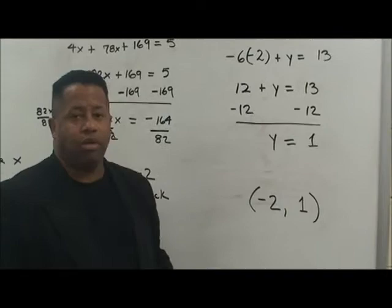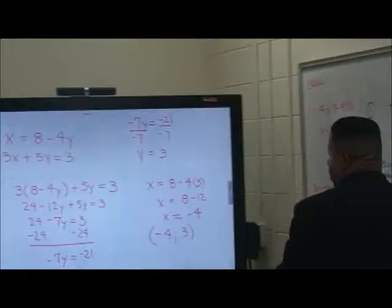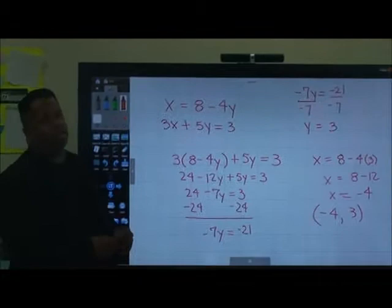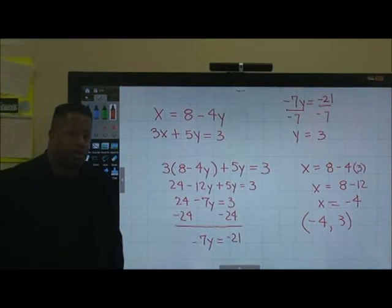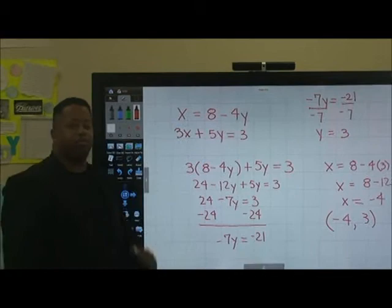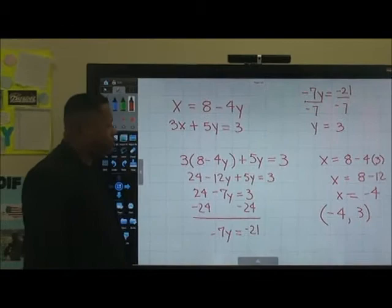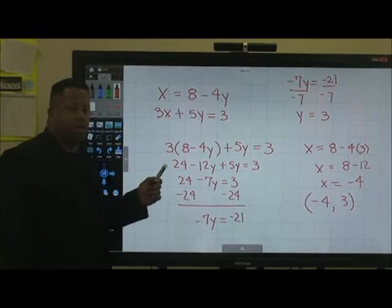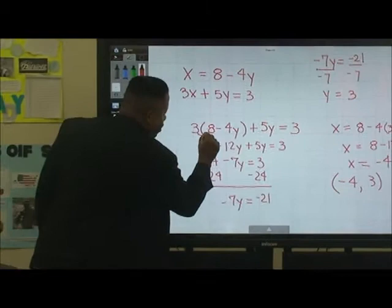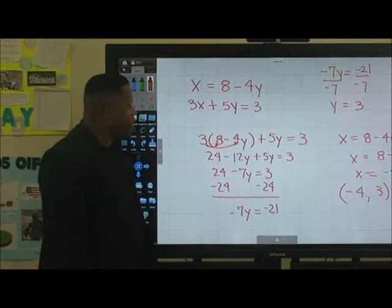Let's do another problem. We have x is equal to 8 minus 4y for the first equation, and 3x plus 5y equals 3 for the second equation. It's obvious that x is set alone, so we're going to use that expression and plug it in for x into the second equation. So 3 times (8 minus 4y) plus 5y is equal to 3. We distribute to get 24 minus 12y plus 5y is equal to 3.